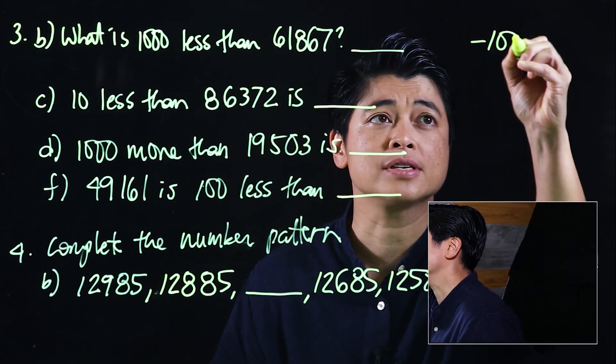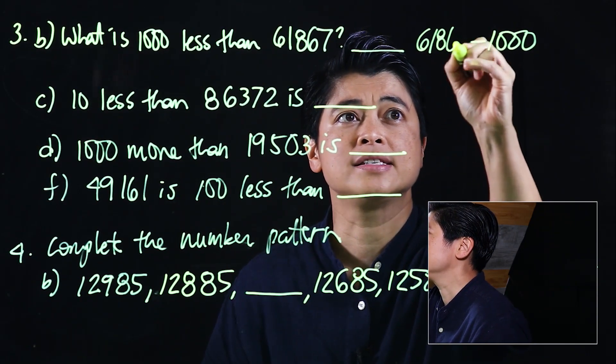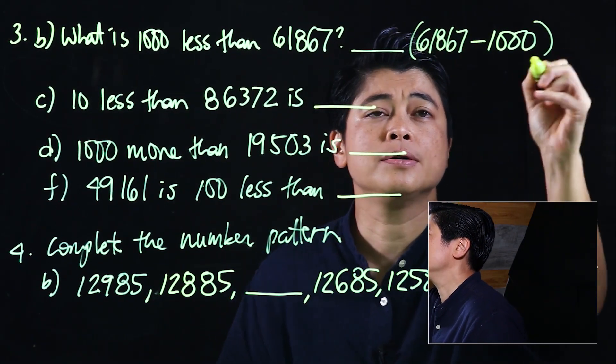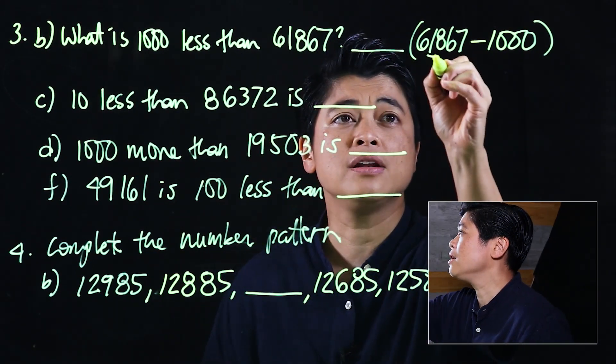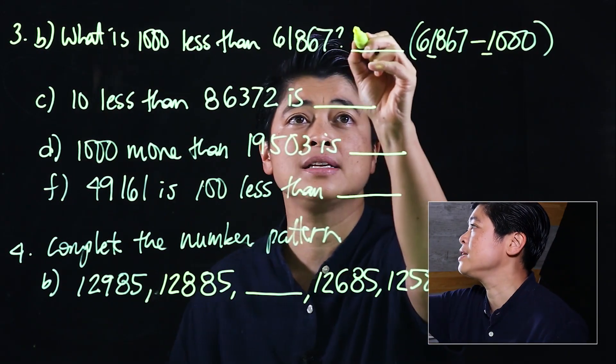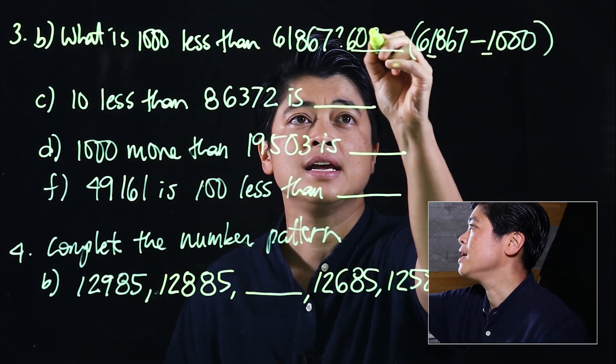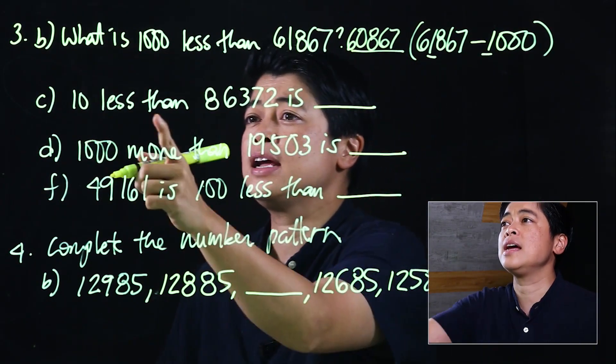Using our mental math strategies from grade 3, we only look at the thousands place and subtract, so that gives us 60,867. In the next problem it says 10 less than 86,372.